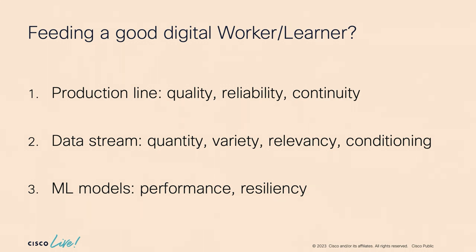The first category is system engineering itself — things like quality, reliability, and continuity of the system, the pipeline, the production line. The second is about the quality of the data stream coming in: quantity, variety, relevance, continuity, and data conditioning with data engineering. The third is tuning the model as we move along, trying different things, and comparing similar models working with the same data or different varieties of data in parallel.